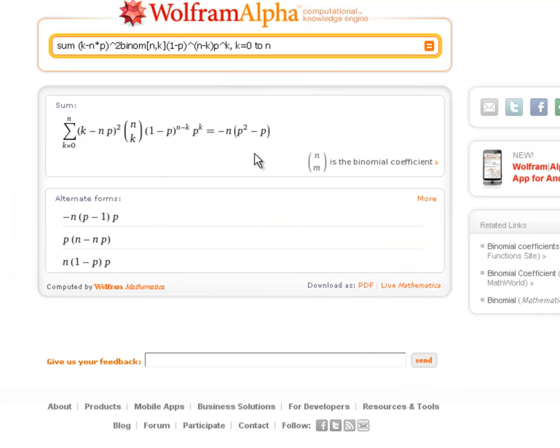Wolfram Alpha is going to do some work for us. It comes up with, now this looks sort of funny, negative n times p squared minus p. This looks like it's a negative number, which is impossible, because if you'll notice, every single factor here is going to be positive.